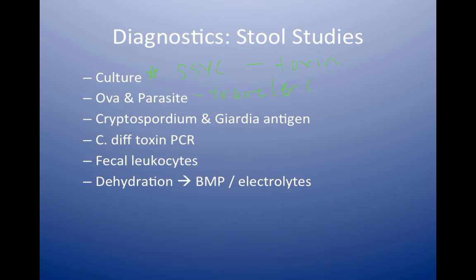There's a separate test for Cryptosporidium and Giardia that will identify the antigen through a latex agglutination test, so this can be ordered separately, and it is more sensitive than the Ova and Parasite, which is simple light microscopy.